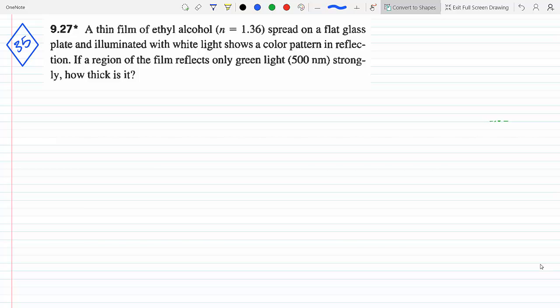If the region reflects only green light strongly, the word strongly means that's a maximum. How thick is it?